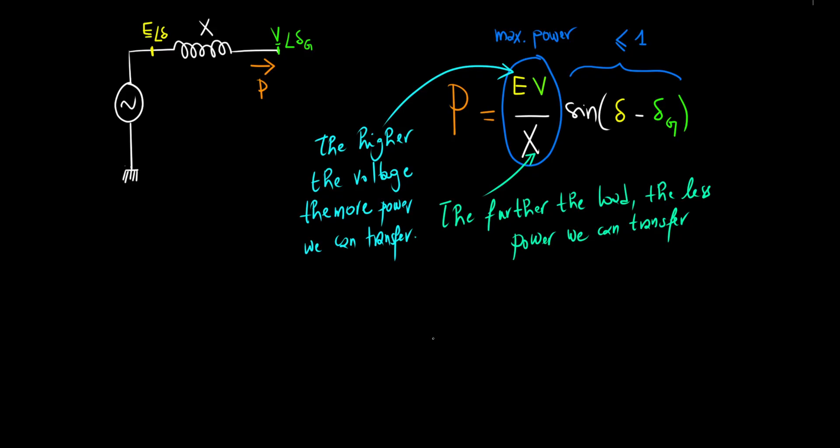But here's the really core part. Given fixed voltage and inductance, we can manage power dispatch between machines by adjusting their internal angle delta, which we control by managing the rotor speed. And just like that, we're back to frequency, the start of our series.